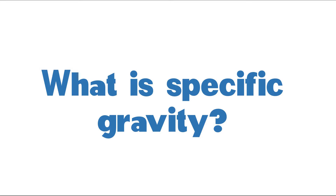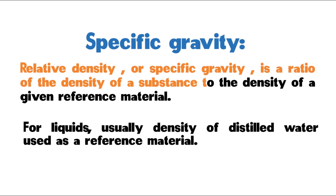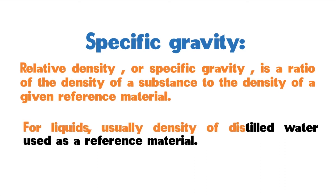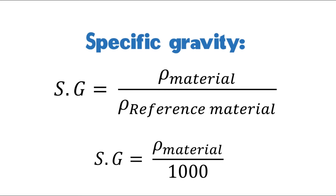Second, we need to learn about specific gravity. Relative density, or specific gravity, is the ratio of the density — mass of a unit volume — of a substance to the density of a given reference material. For liquids, the density of distilled water is usually used as the reference material. Specific gravity can be determined theoretically by dividing the density of the material by the density of the reference material. For liquids, the density of water at 4 degrees Celsius is used, which is equivalent to 1000 kilograms per cubic meter.